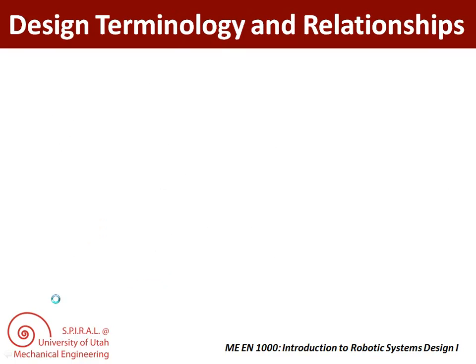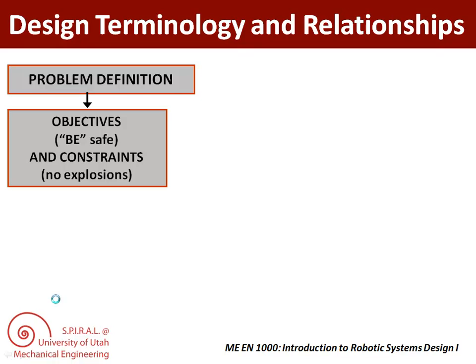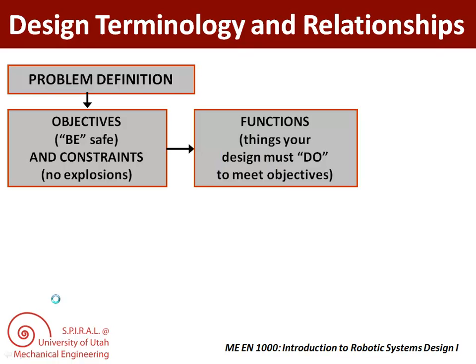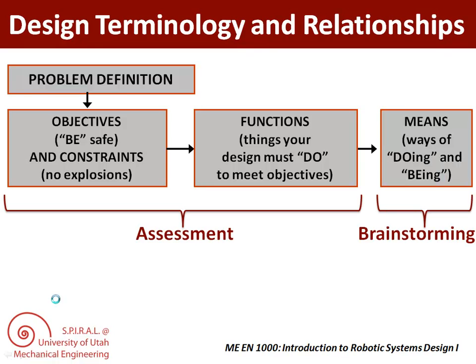Let's summarize. You start with a problem definition and move on to the objectives and constraints. Next, you develop functions for your design. These are all part of the Big A assessment phase. Next week, we'll start to think about ideas for our designs by brainstorming means, which are ways that we can do the functions and be the objectives. Thanks for listening, and we'll see you in class where we'll start to do some activities related to assessment. Thanks!